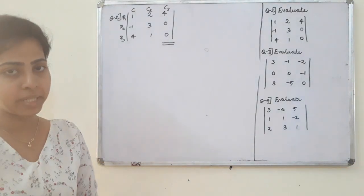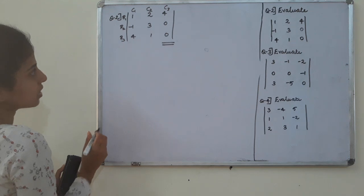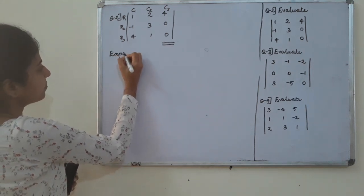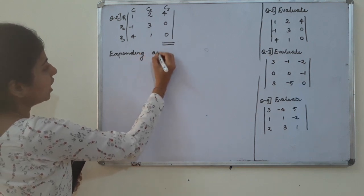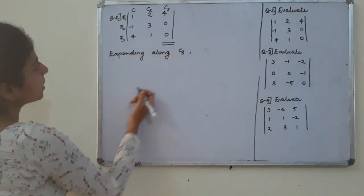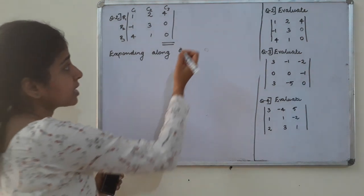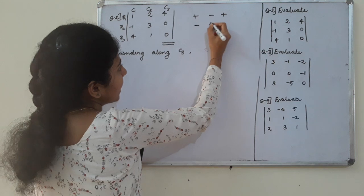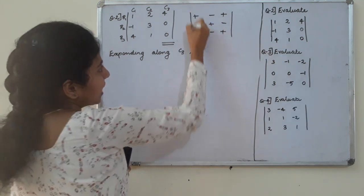Now we have to look at column 3. We are expanding along column 3. If we expand column 3, we will assign the signs: plus, minus, plus; minus, plus, minus; plus, minus, plus.